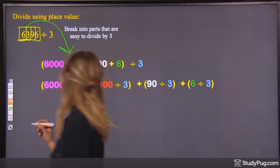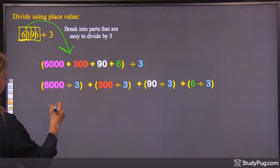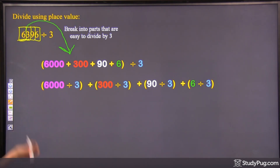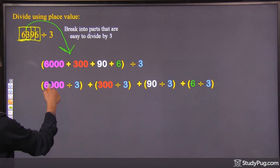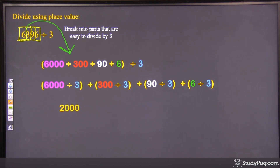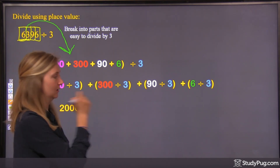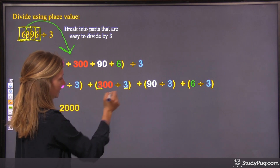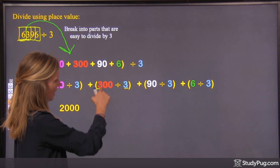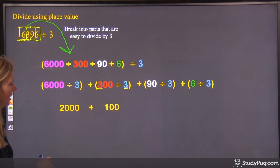Let's do this. 6 divided by 3 is 2 — 2 times 3 is 6 — so 2 with three zeros on the end: 2,000. Plus 300 divided by 3: well, 3 divided by 3 is 1, and then you add two zeros on the end, so plus 100.